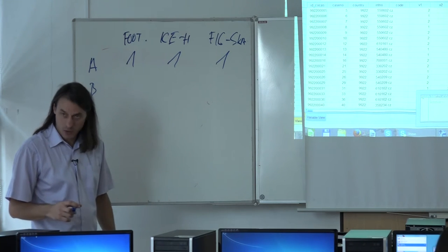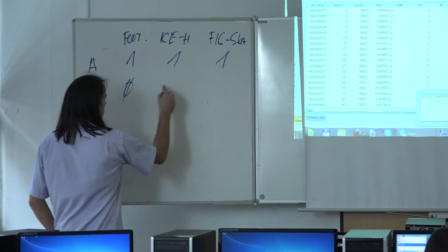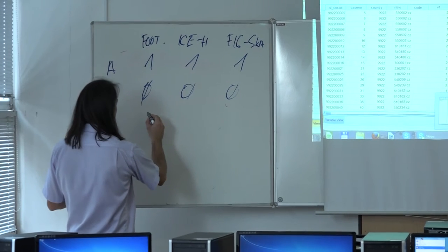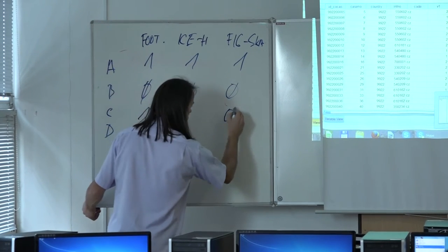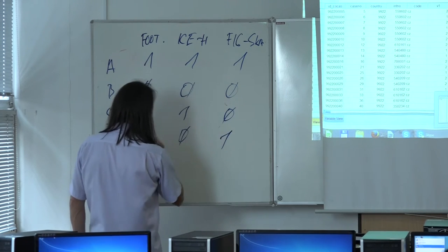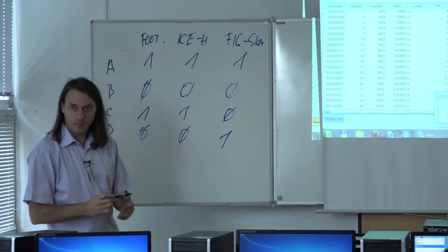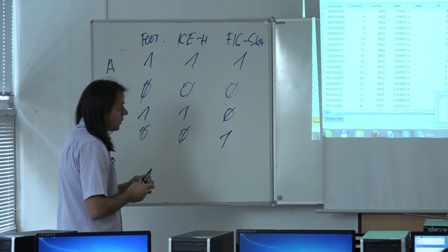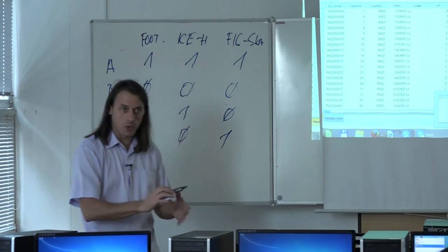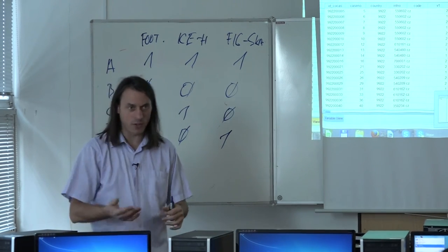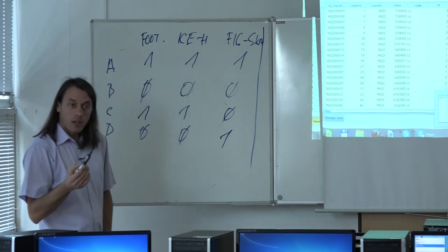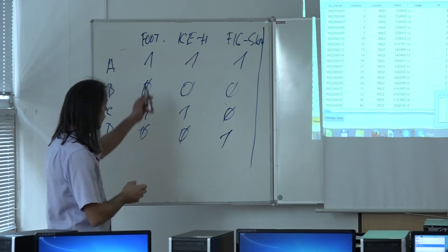The second respondent is the opposite — no visit at all: zero, zero, zero. The next one may be a mixture — football yes, ice hockey yes, but no figure skating. And the last one may be a lady interested only in figure skating. You can use this general approach with ten variables, one hundred variables, et cetera, to count the occurrence of special values.